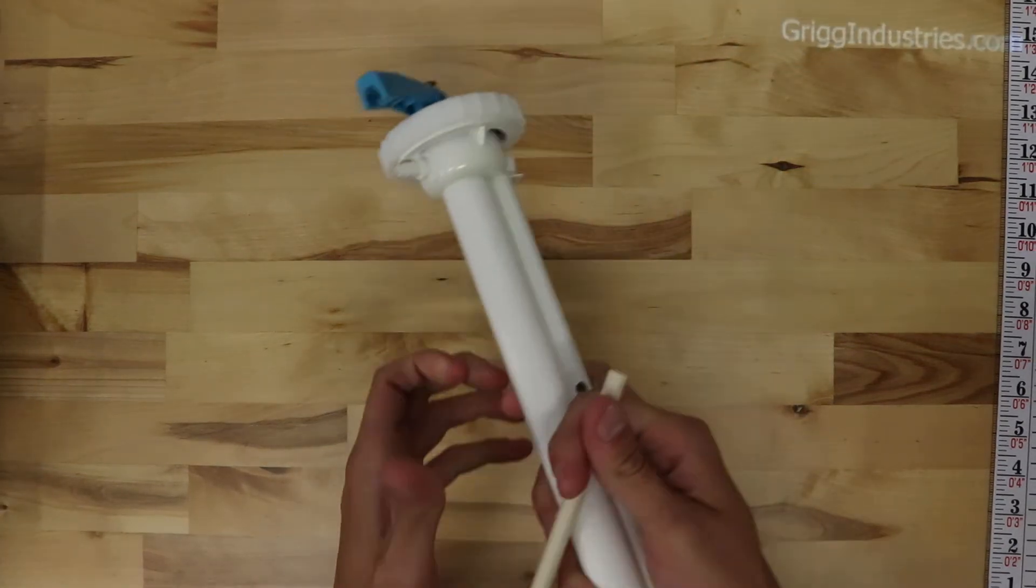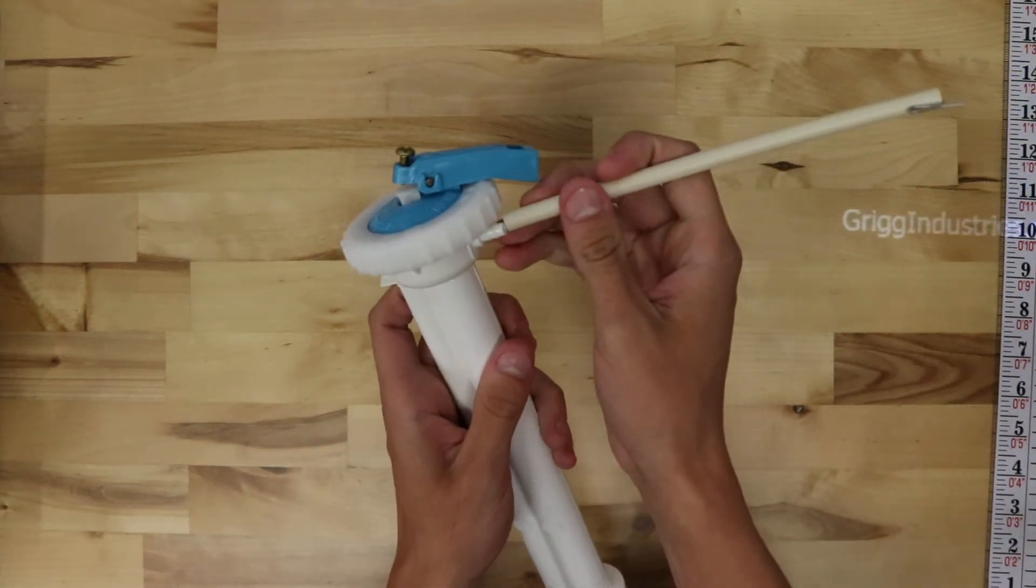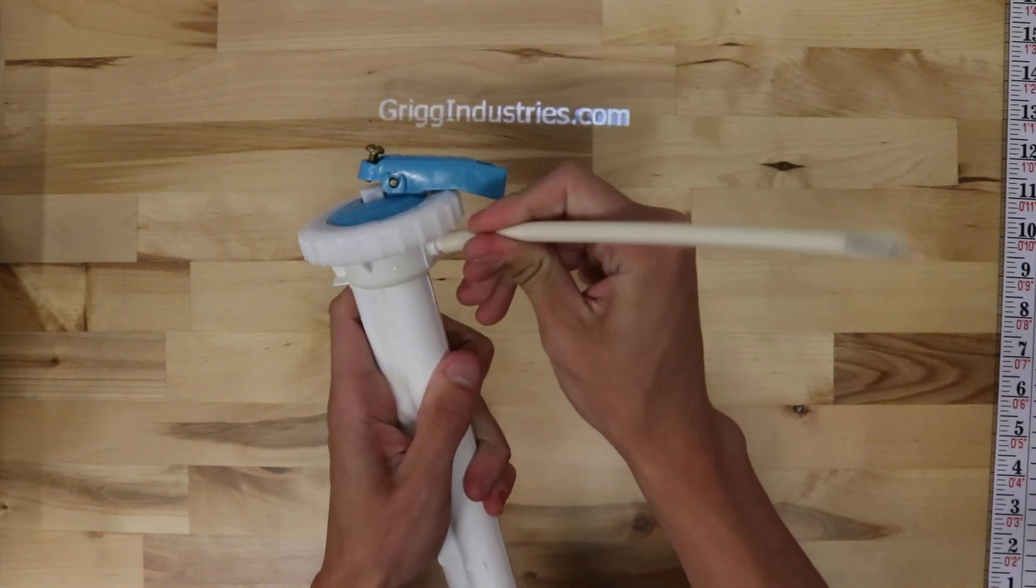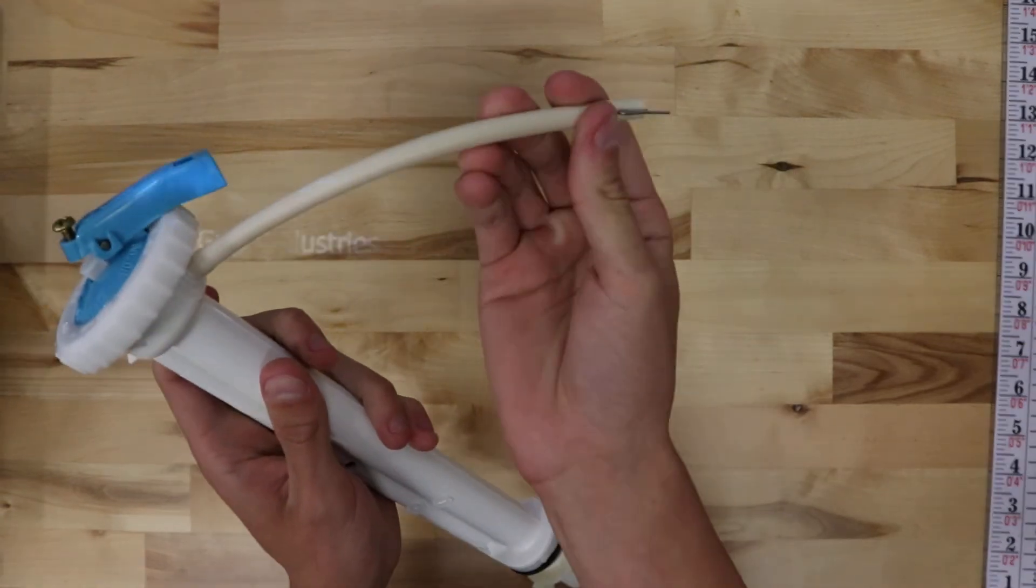And then the replenish tube just slips on here and would clip onto the flush valve there.